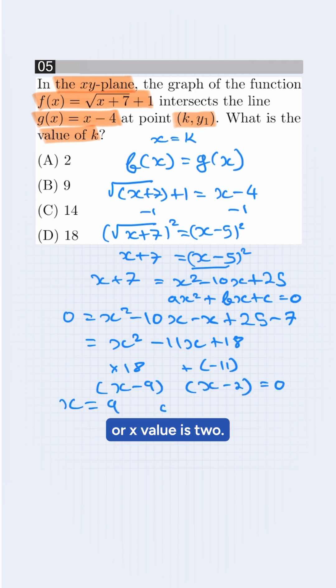So x value is 9 or x value is 2. x is equal to 9 is only in the options so correct option will be B.